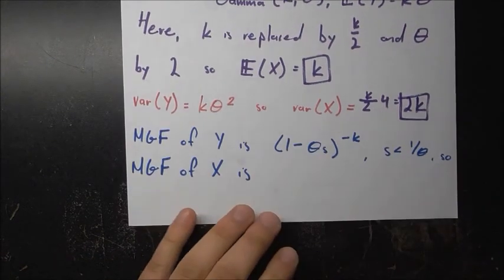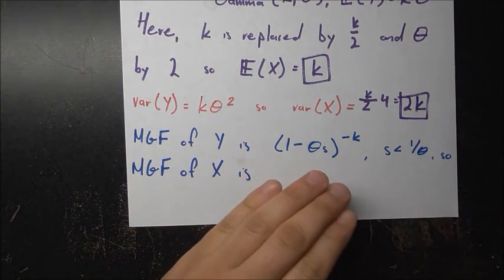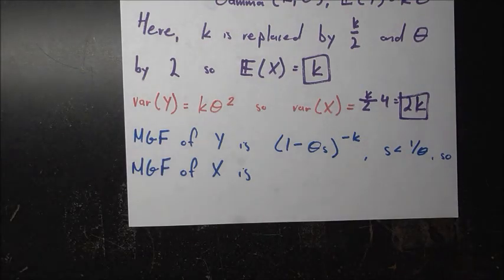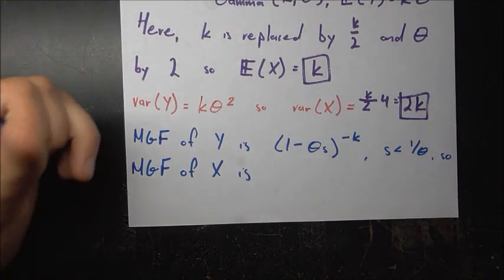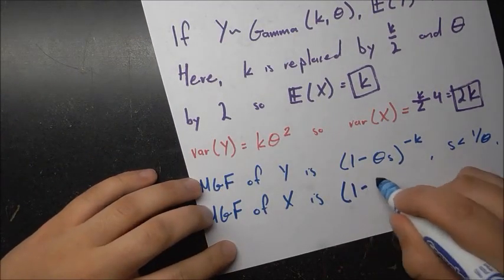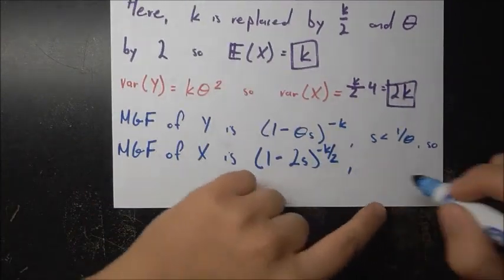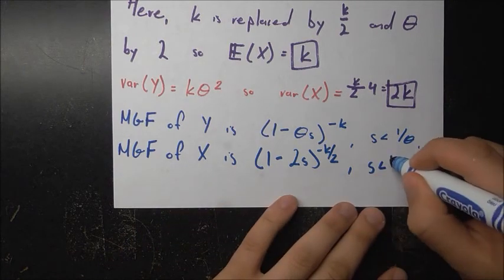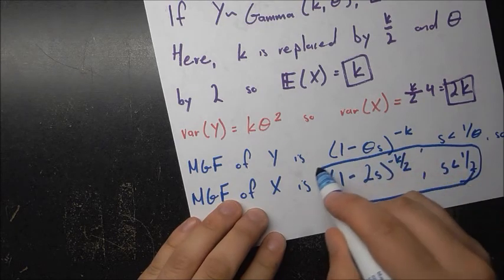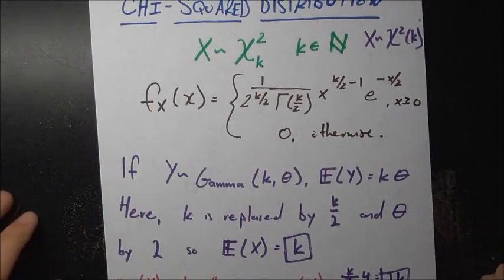The last thing is the MGF. The MGF of a gamma distribution is (1 - theta·s)^(-k), as long as s is less than 1/theta. Plugging in our substitutions, the MGF of x is (1 - 2s)^(-k/2), as long as s is less than 1/2. That was very simple because we already had all these results from the gamma distribution.